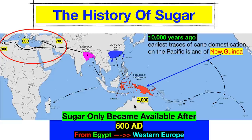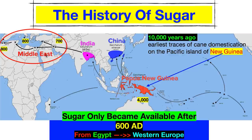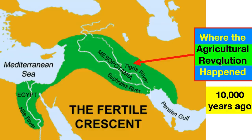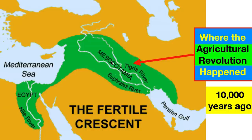So the history of sugar: Papua New Guinea 10,000 years ago — the earliest traces of cane domestication. Sugar only became widely available after 600 AD, moving from Egypt to Western Europe. From Papua New Guinea it took until about 4,000 years ago to begin migrating into China and India, reaching the Middle East — the Fertile Crescent — by 700–800 AD. That's the cradle of civilization. From there, about 8,000 years elapsed from the agricultural revolution before sugar arrived in that region.